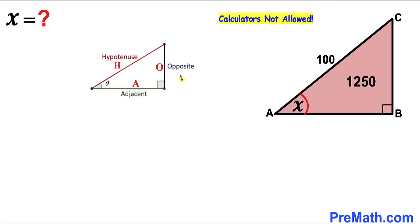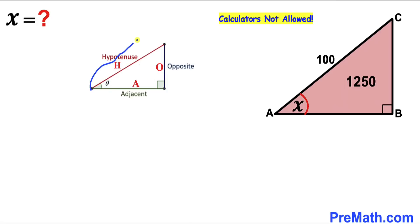Let's go over this right triangle. If this is our angle theta, then the side adjacent to this angle is our adjacent side, the side opposite to this angle is called the opposite side, and the longest leg is called the hypotenuse. In our triangle ABC, if this is angle x, then side AB is our adjacent side, side BC is our opposite side, and AC is our hypotenuse.